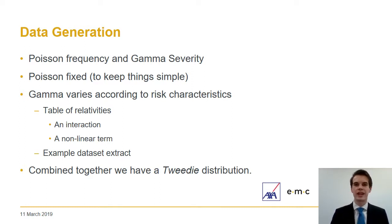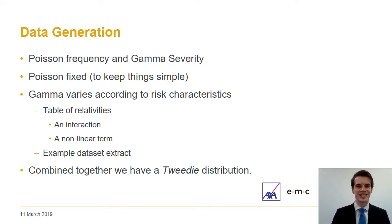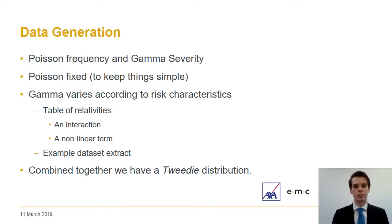We've created four variables that feed into our gamma model. Three are categorical with relativities assigned to each possible value, and we also have a non-linear response curve attached to our numerical variable. We've also modelled in an interaction to make things more interesting and realistic. These relativities are multiplied together and fed into the gamma model's shape parameter for each row of data. Combining the Poisson frequency and gamma severity gives us a Tweedie distribution, so we're going to be creating Tweedie models.